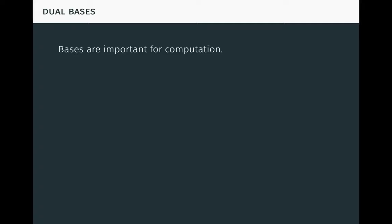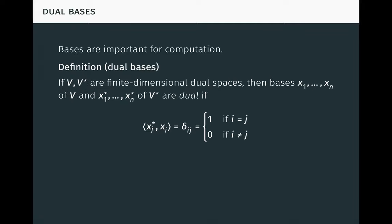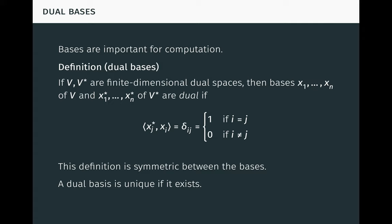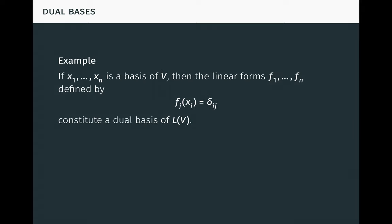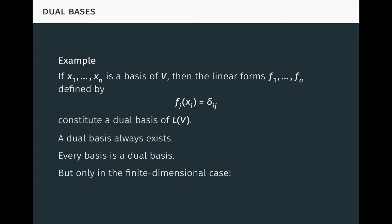Bases are extremely important for computation. If V and V-star are finite-dimensional dual spaces, then bases x1 to xn of V and x-star-1 to x-star-n of V-star are dual if x-star-j times xi equals delta-ij, which is 1 when i equals j and 0 otherwise. That delta is called the Kronecker delta. Note this definition is symmetric between the two bases. It's immediate from non-degeneracy of the scalar product that the dual basis is unique if it exists. As an example, if x1 to xn is a basis of V, then the linear forms f1 to fn defined by fj of xi equals delta-ij constitute a dual basis of LV, as you should verify. It follows from this example and the theorem on linear forms that a dual basis always exists. And by symmetry, every basis is a dual basis — but remember, we're only talking about the finite-dimensional case here.